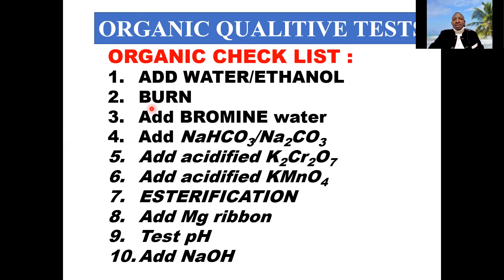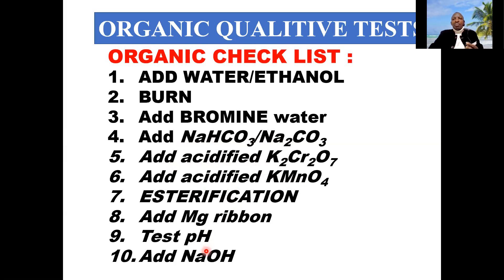One of the things that will be tested is: add water or add ethanol. You can also be asked to burn. You can also be asked to add bromine water, sodium hydrogen carbonate or sodium carbonate, acidified potassium dichromate-6, acidified potassium manganate-7, test the pH, and add sodium hydroxide. By the end of this presentation, you should know: when you add water, what are the expected observations, and what is the expected inference?